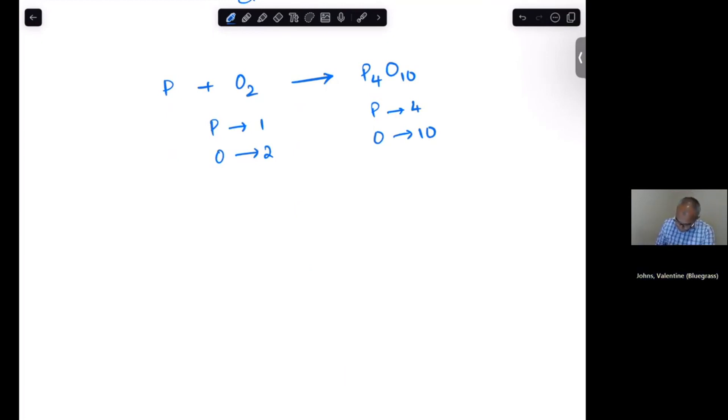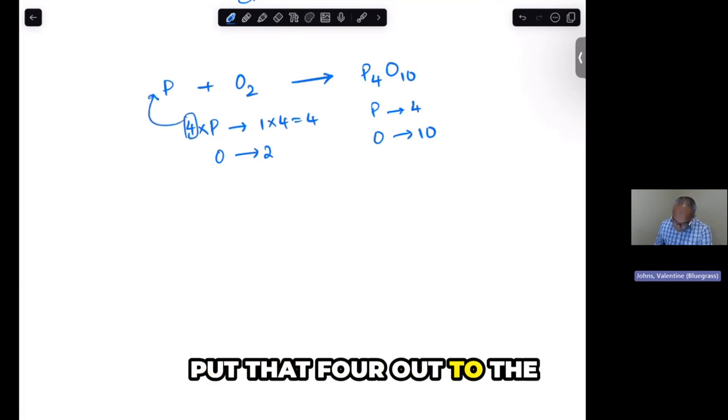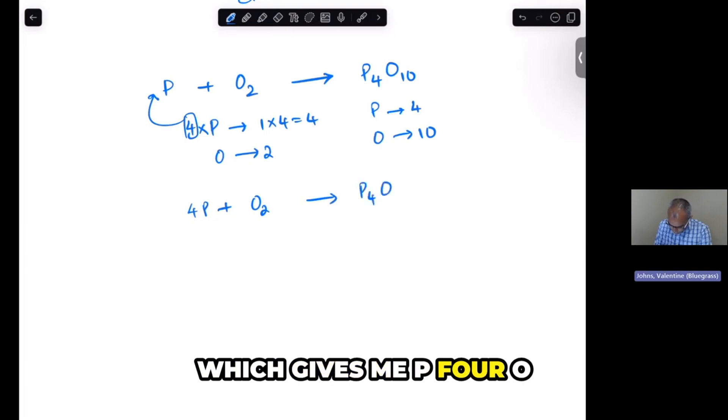Alright. So I'm going to go ahead and choose the phosphorus. So 4 times P gives me 4 phosphoruses out here. I'm going to put that 4 out to the left. And now, when I do that, I'm going to get 4P plus O2, which gives me P4O10.